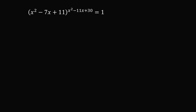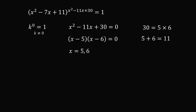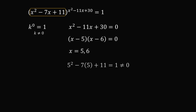Now for Case 2, where k to the power of 0 equals 1 with k non-zero. We need the exponent x squared minus 11x plus 30 to equal 0. This factors as (x minus 5)(x minus 6) equals 0, since 30 equals 5 times 6 and 5 plus 6 equals 11, giving roots x equals 5 or x equals 6. We must verify the base is not simultaneously 0. Substituting into x squared minus 7x plus 11: at x equals 5 we get 1, and at x equals 6 we get 5 — both non-zero. So x equals 5 and x equals 6 are solutions.